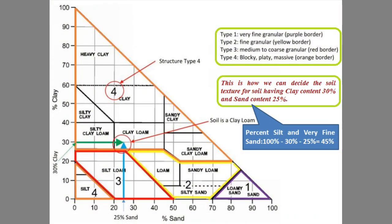This is how we determine soil texture. For a soil having clay content of 30 percent and sand content of 25 percent: from the clay axis at 30 percent we move across, and from the sand axis at 25 percent we move up. The soil texture falls in the clay loam region. The structural class is 4, shown in the orange region. You can use this chart to determine the structure class of your soil.